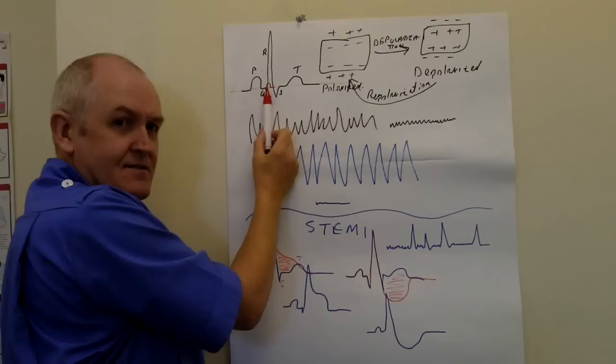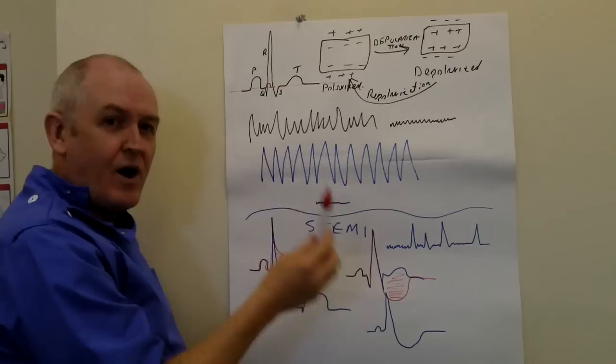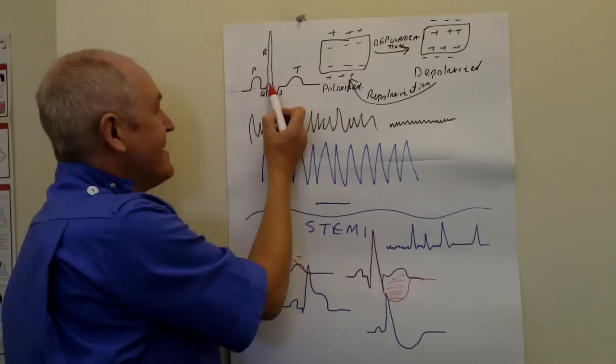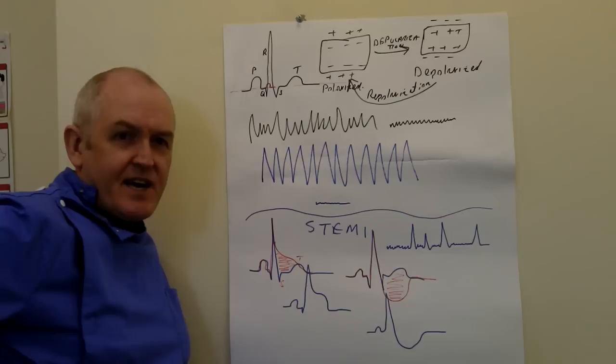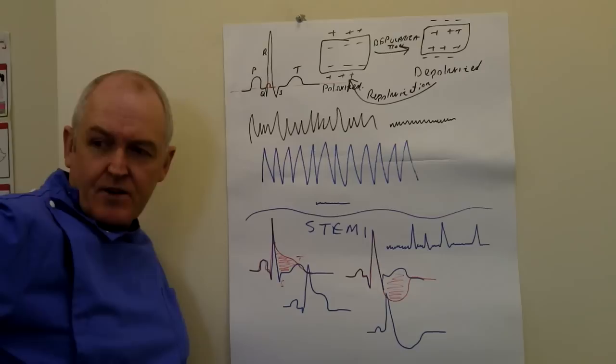It's a very good question — you knew the answer already. Why don't you see atrial repolarisation? The answer is it's there, but the repolarisation wave of the atrial myocardium is buried in the QRS complex, so you don't see it.